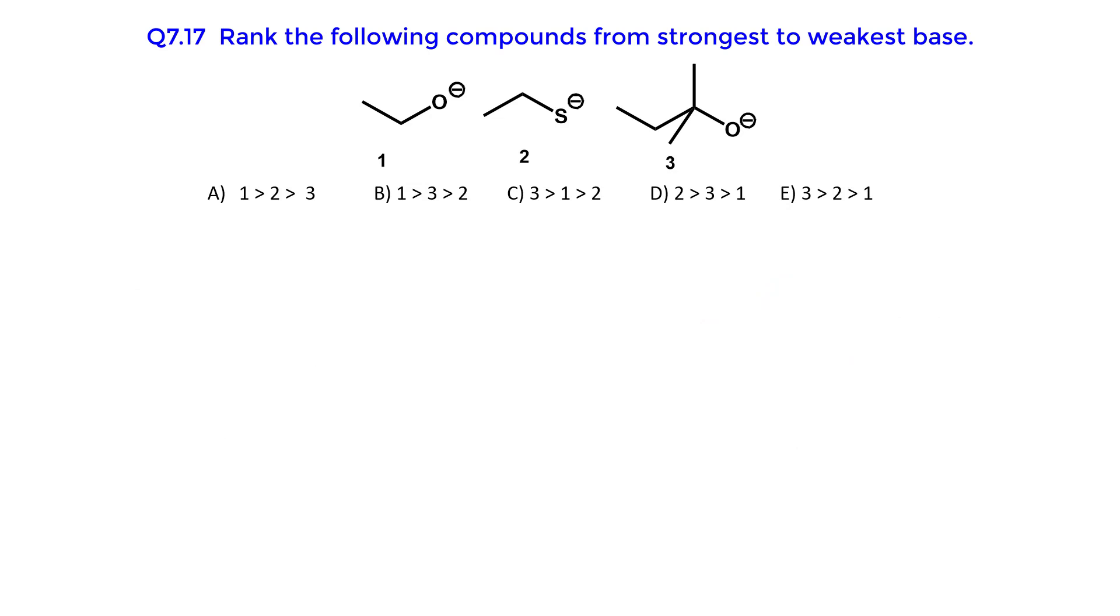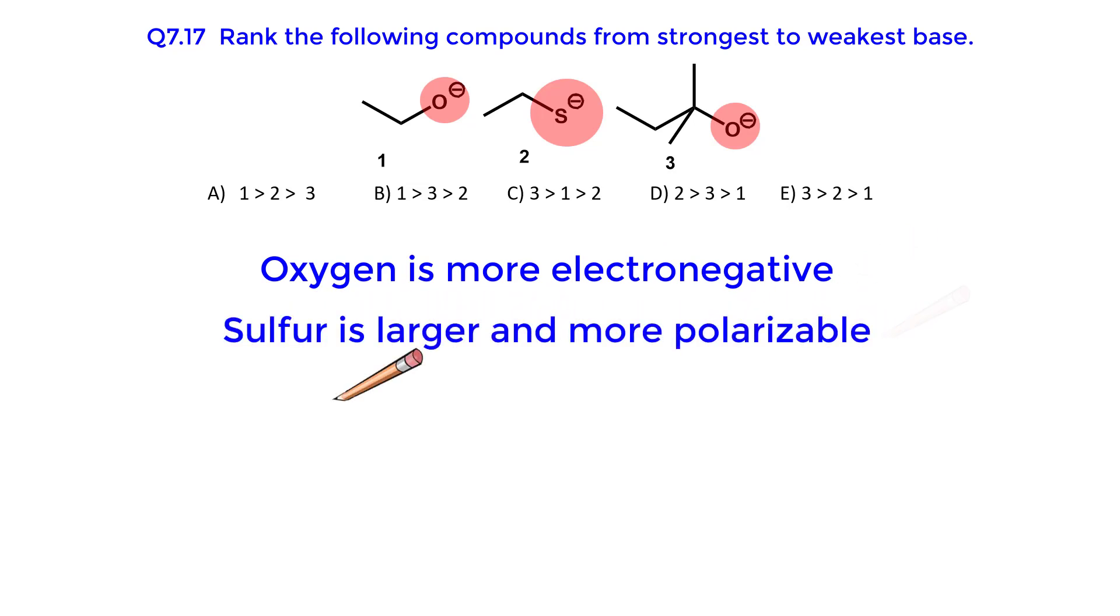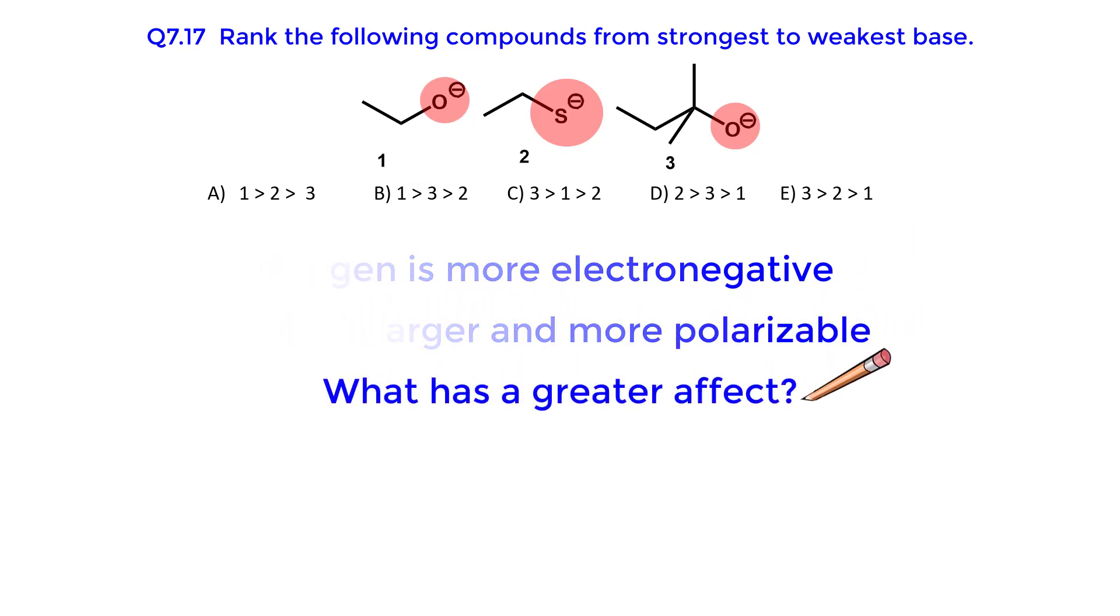First look at the molecules as two groups: an oxygen atom with a negative charge and a sulfur atom with a negative charge. Oxygen is more electronegative than sulfur, and sulfur is larger and more polarizable than oxygen. What has a greater effect?